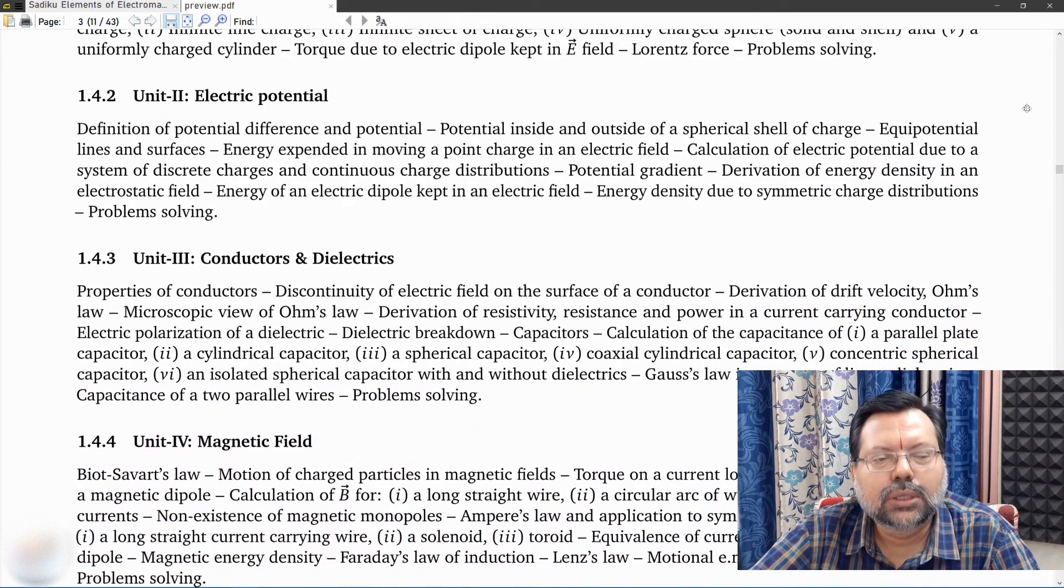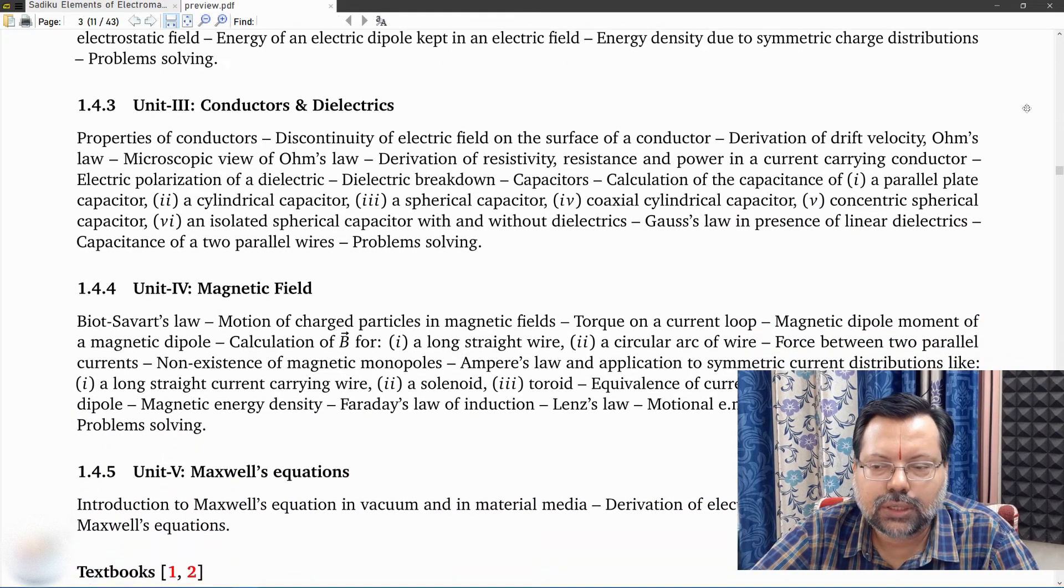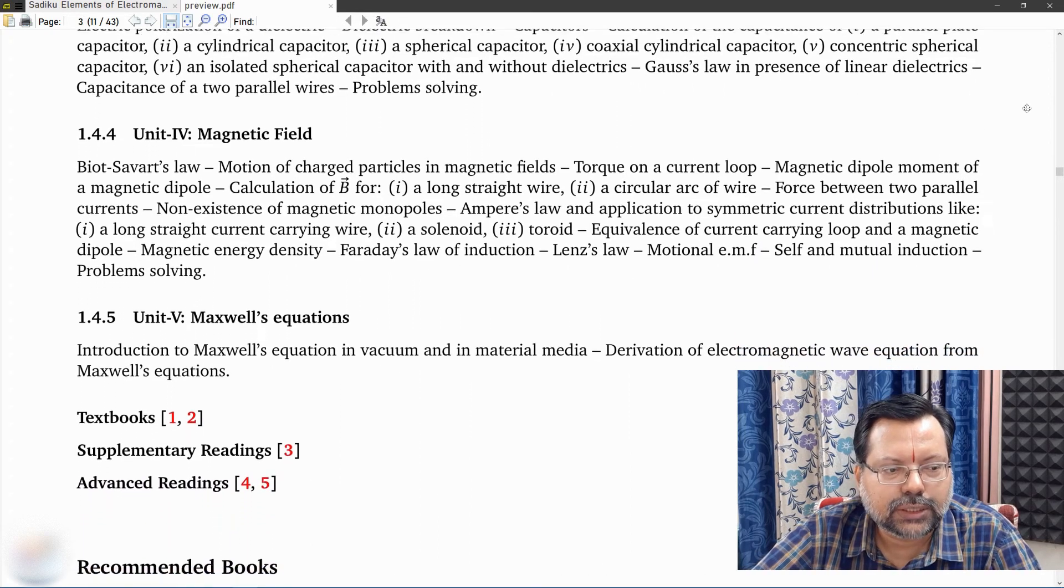The first unit is electric potential, third unit is conductors and dielectrics, followed by magnetic field, and the last unit would be Maxwell's equations of electromagnetism.